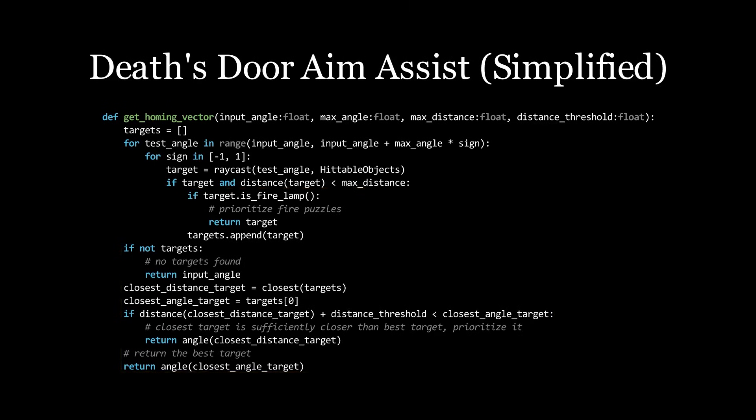This reversal is interesting because it allows for multiple layers of context sensitivity. For example, puzzle elements have higher priority than nearby enemies, which in turn have higher priority than far away enemies.